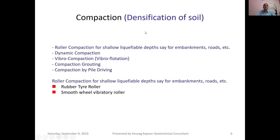Compaction and densification of soil methods include roller compaction for shallow liquefiable depths such as embankments, dynamic compaction, vibro-compaction, vibro-flotation, compaction grouting, and compaction by pile driving. Roller compaction is applicable for shallow liquefiable depths for embankments and roads. We use rubber-tire rollers and smooth-wheel vibratory rollers to compact soils in layers so as to effectively neutralize earthquake-induced liquefaction effects later.